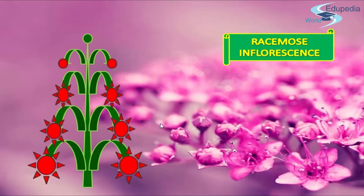Based on the arrangement of flowers on the main axis, that is the peduncle, and the timing of its flowering, inflorescence can be of two types: determinant and indeterminate inflorescence.